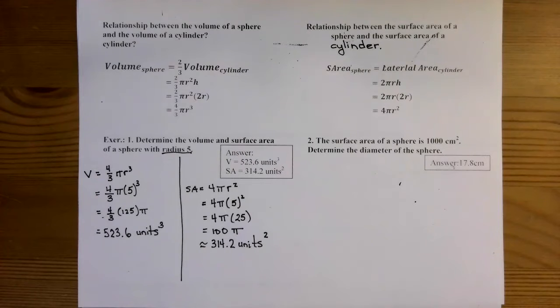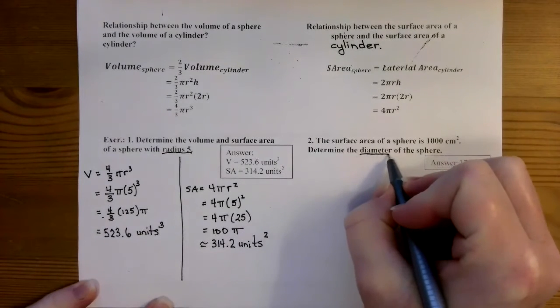All right, so let's take a look at question number two. Question number two says the surface area of a sphere is 1,000 centimeters squared, and you have to determine the diameter of the sphere.